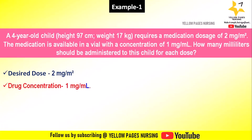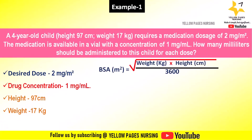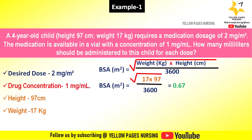Drug concentration is 1 milligram per ml, height is 97 centimeters, and weight is 17 kilograms. The formula to calculate body surface area is: square root of weight in kilograms multiplied by height in centimeters, divided by 3600. This equals the square root of 17 multiplied by 97, divided by 3600, which gives the answer 0.67 meter squared.